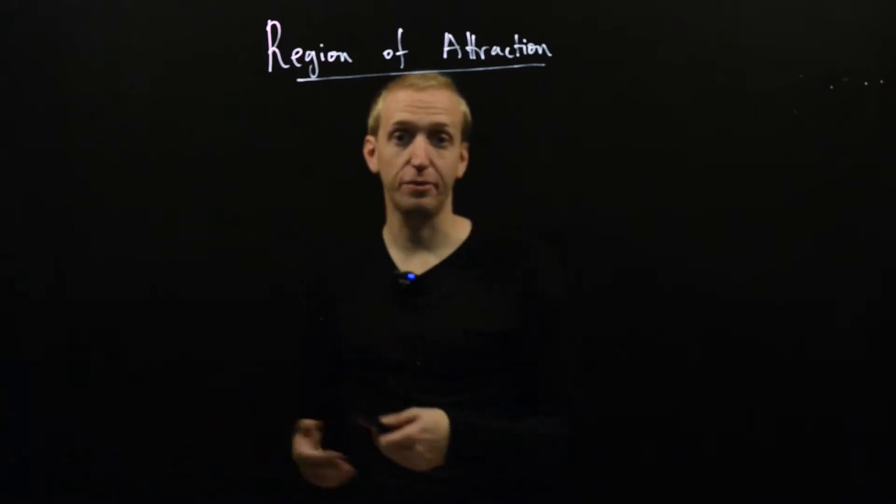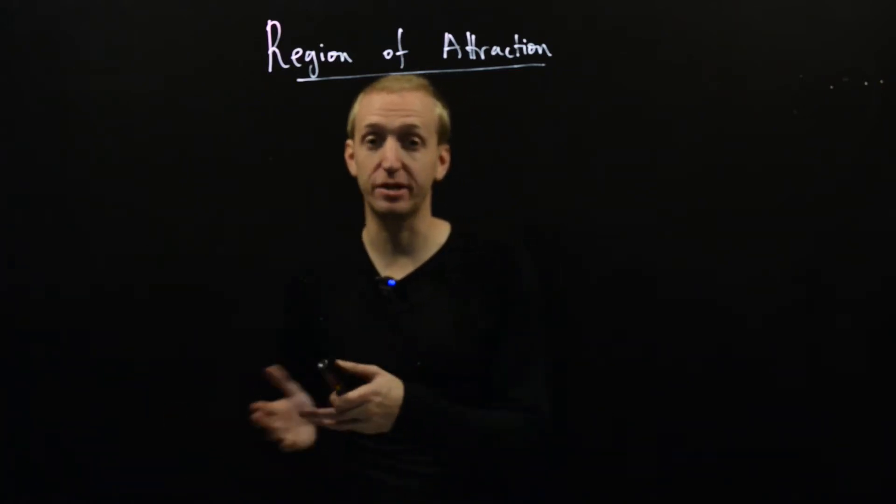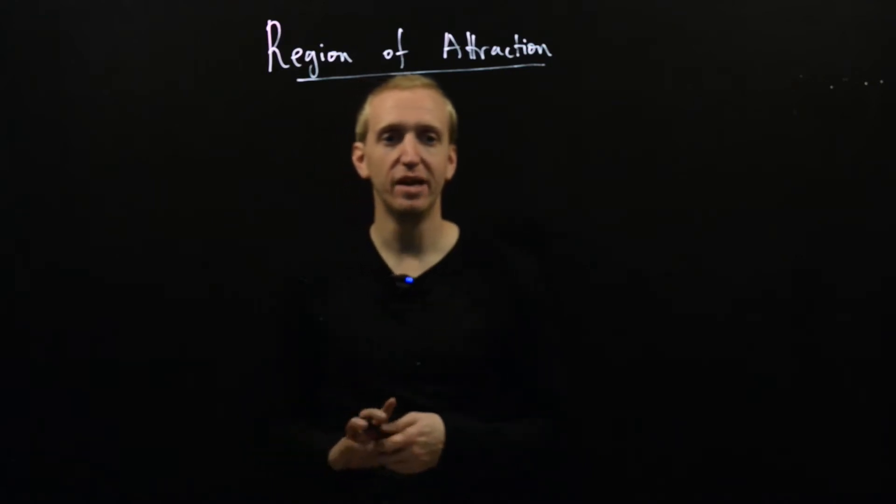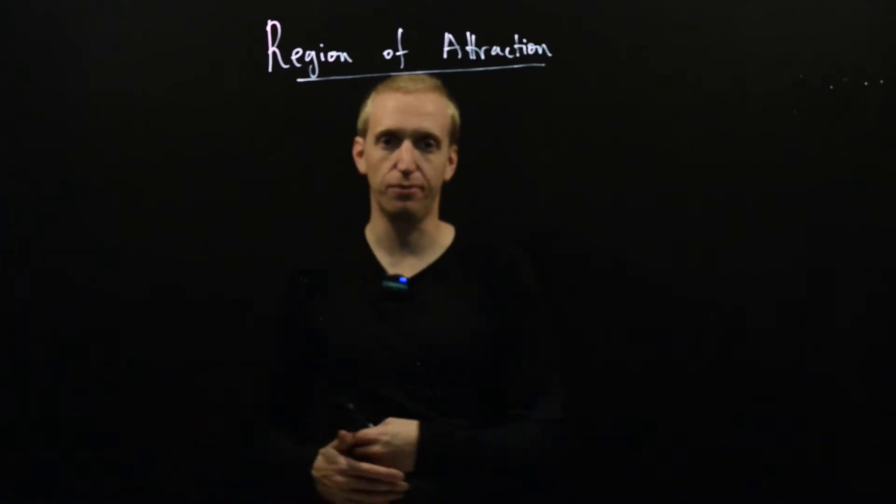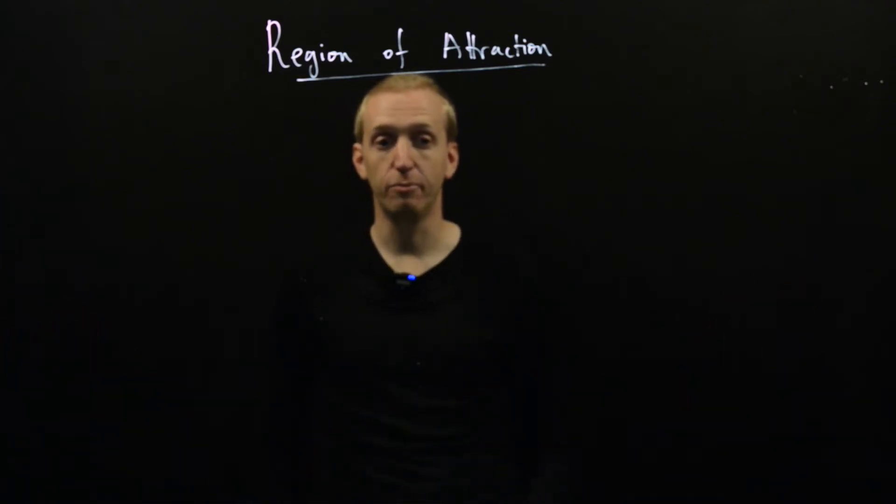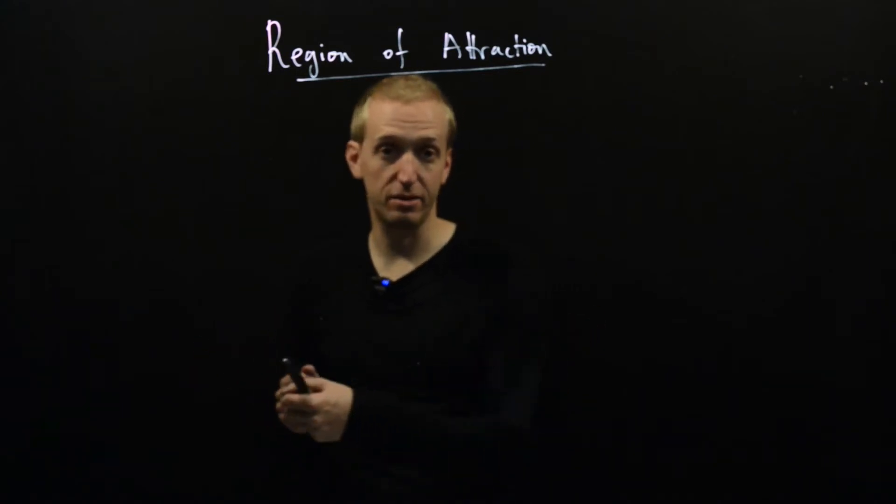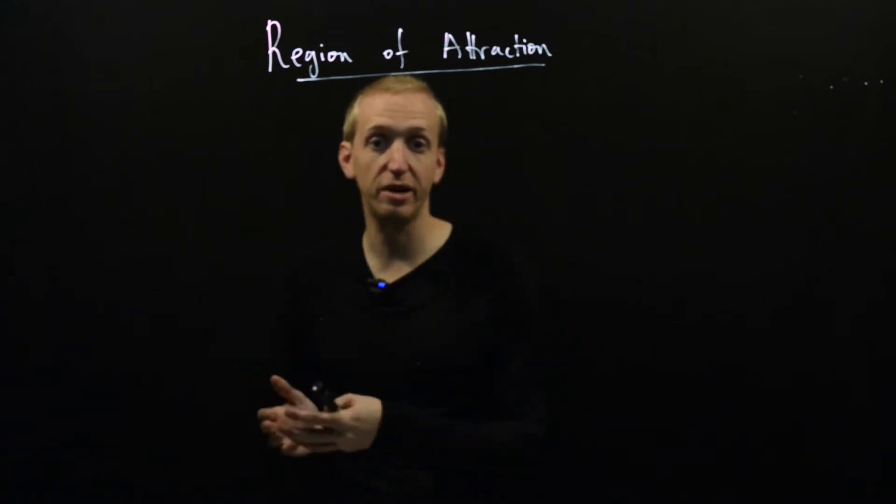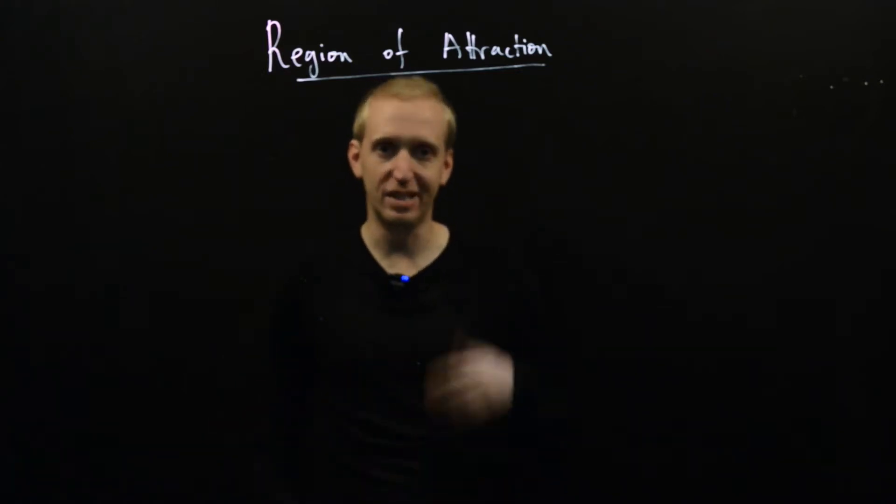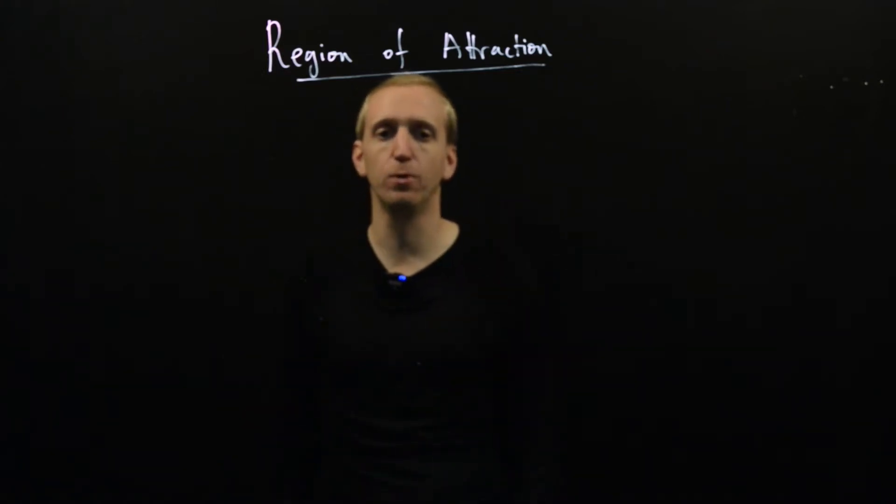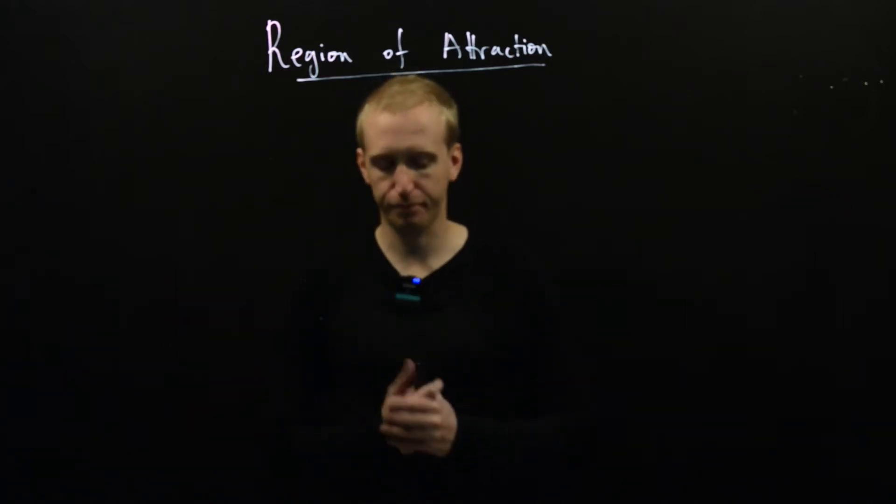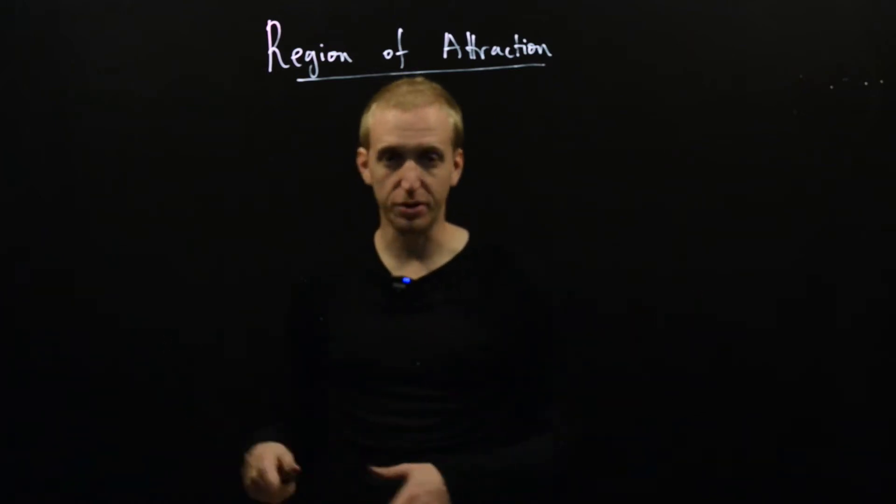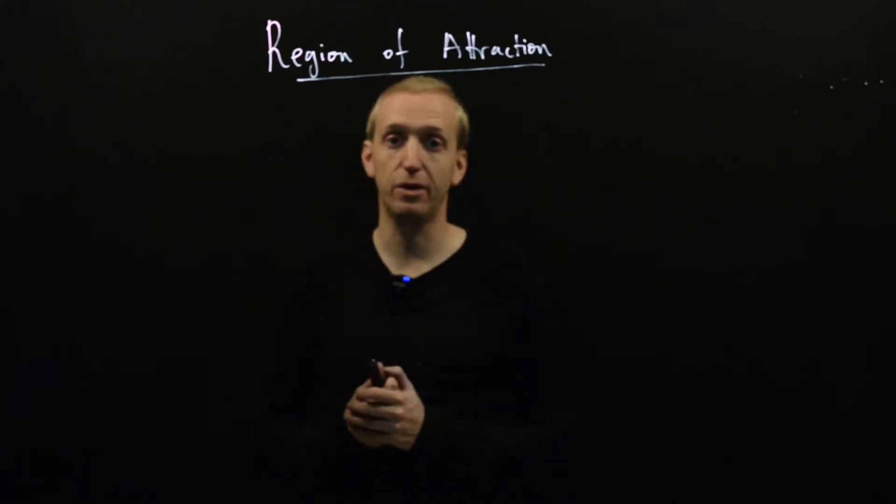Remember, before we talked about this disease spread with a test and trace system, where we were trying to quickly chase down infectious individuals and isolate them before they could spread the disease through a population. But if that tracing had some finite capacity, if the number of infections gets too large, the system gets overwhelmed and an epidemic will ensue anyway.